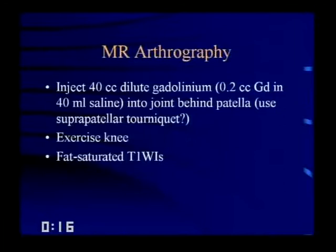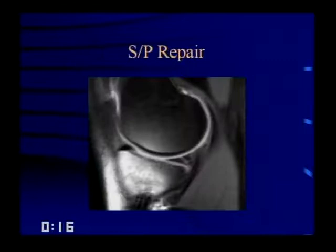If you choose to do MR arthrography, inject up to 40 cc of dilute gadolinium into the knee behind the patella. A suprapatellar tourniquet may help, and you can exercise the knee to slosh the gadolinium around before obtaining fat-saturated T1-weighted images. These can be confusing, particularly because many patients who've had meniscal surgery also had ACL repair, resulting in incomplete fat saturation due to adjacent metal from screws.